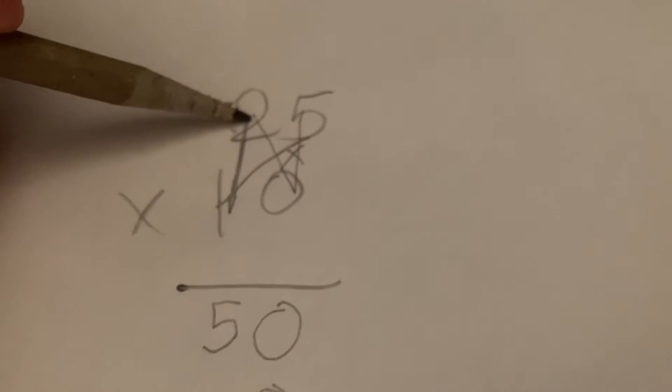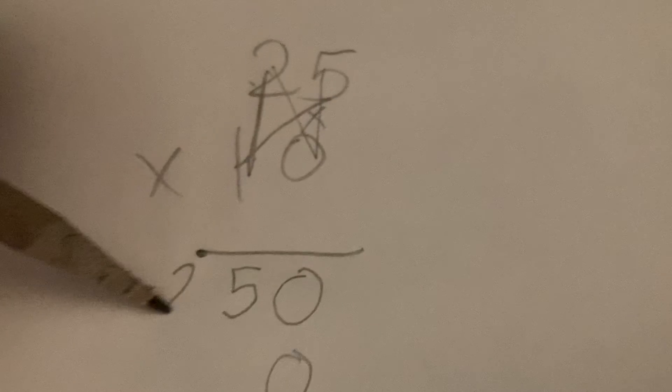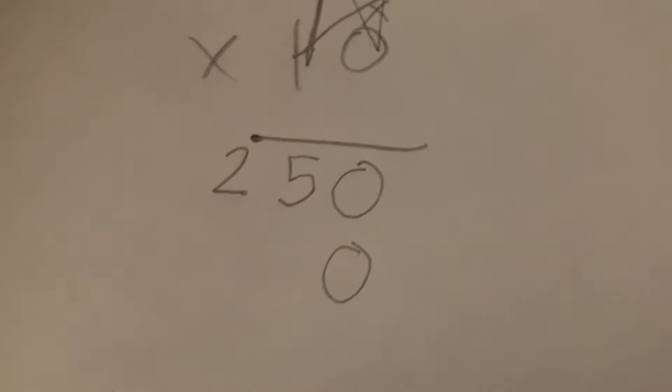Now, what is 1 times 5? 5, right? Now, what's 1 times 2? It's 2. So we have 250 here.